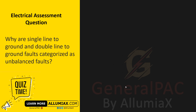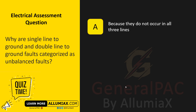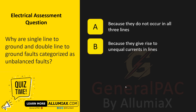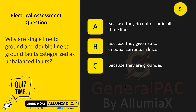Why are single-line-to-ground and double-line-to-ground faults categorized as unbalanced faults? A. Because they do not occur in all three lines. B. Because they give rise to unequal currents in lines. C. Because they are grounded.